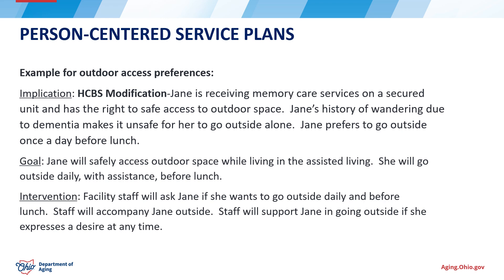The goal is that Jane will safely access outdoor space while living in the assisted living — she will go outside daily with assistance before lunch. Intervention: Facility staff will ask Jane if she wants to go outside daily and before lunch. Staff will accompany Jane outside and support Jane in going outside if she expresses a desire at any time. This example indicates that Jane's preferences are being considered as far as time of day and how much time she wants to spend outside, and it indicates her level of need for assistance with clear communication to staff as to how they can best support her.